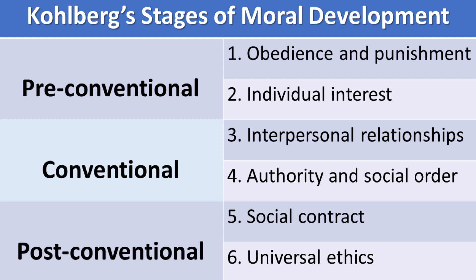Those stages are numbered one through six. Kohlberg believed that most people largely stopped at the conventional level of morality at stage four by adolescence and continued in that well into adulthood. If you'd like to know more about any of these theories or about attachment and parenting styles, please check out the additional videos and you can find links for those below.